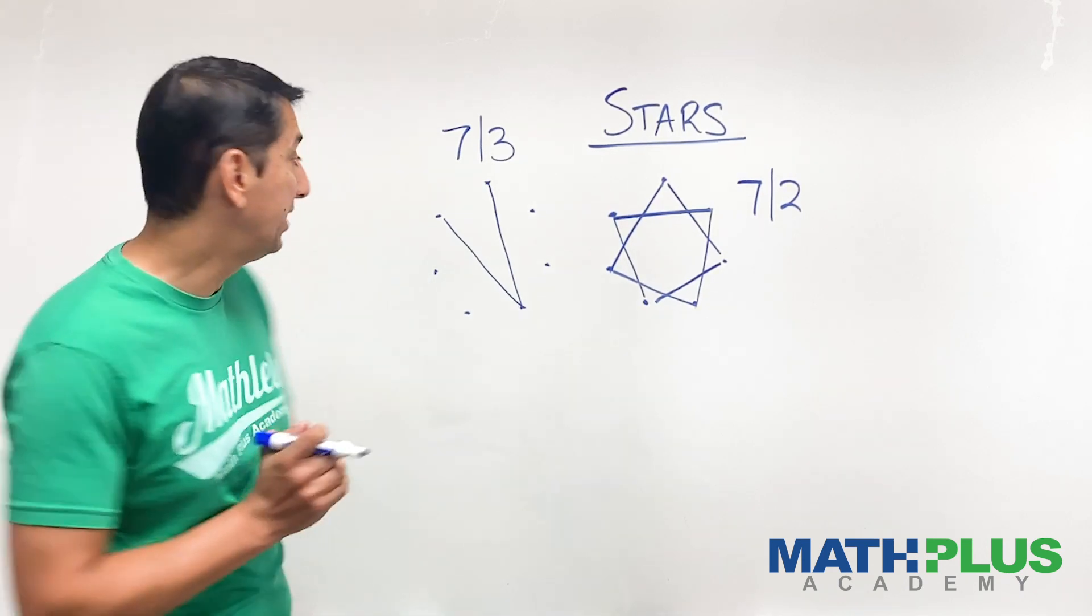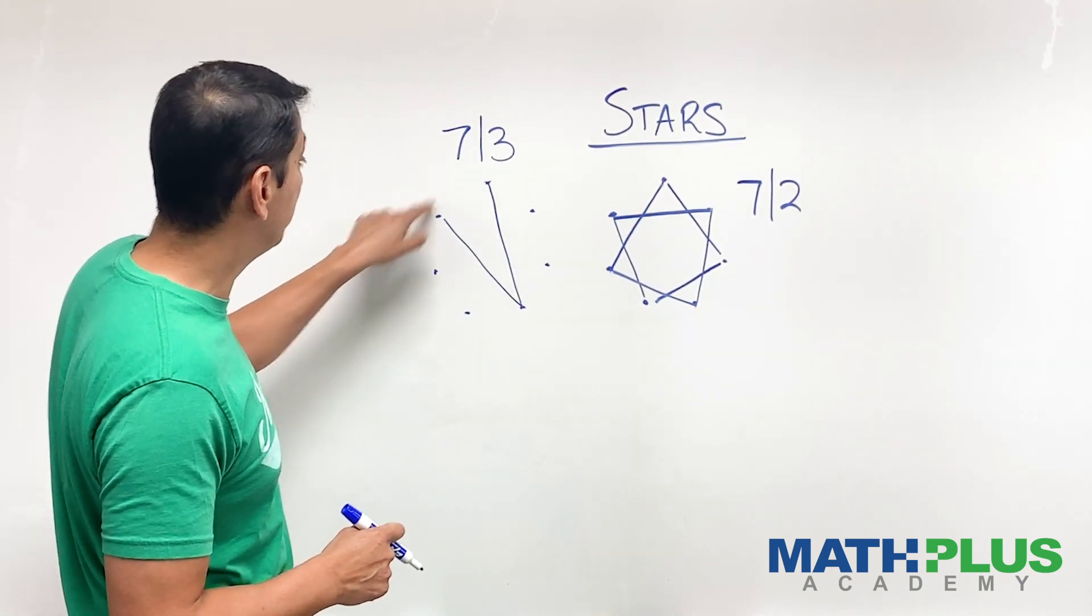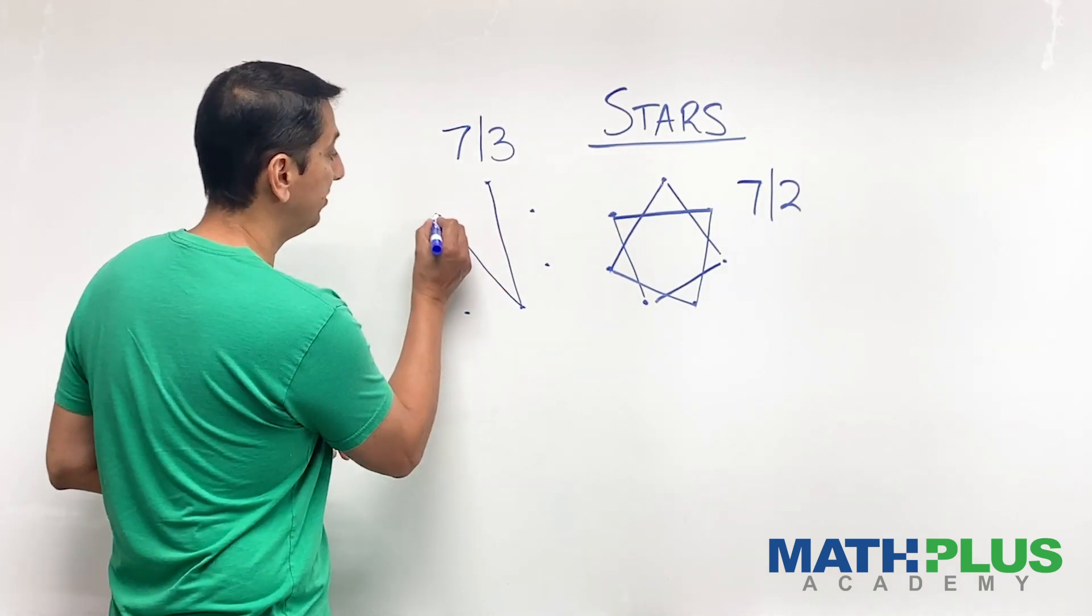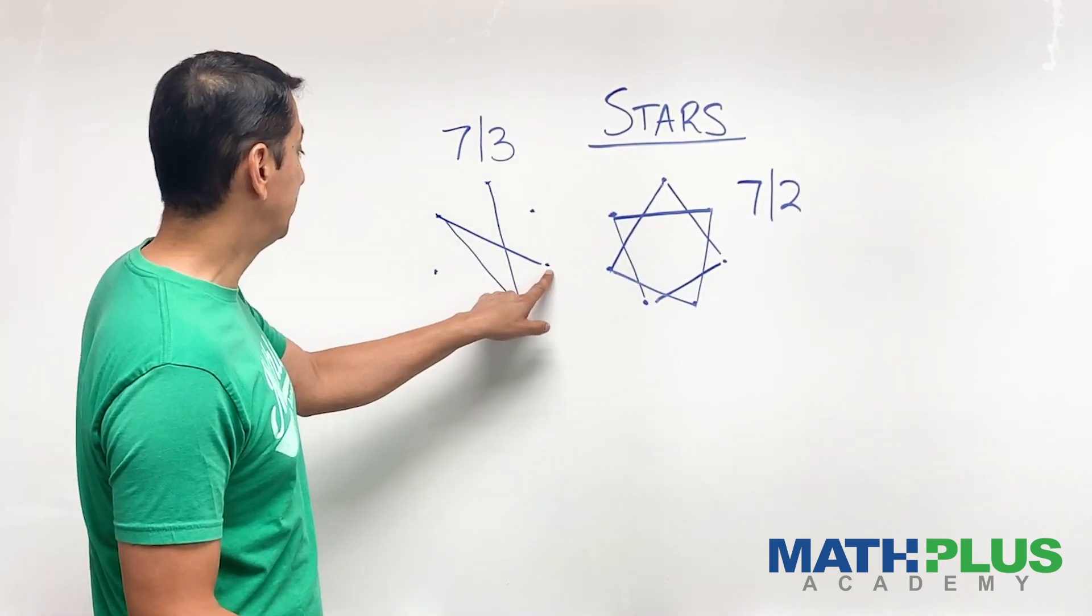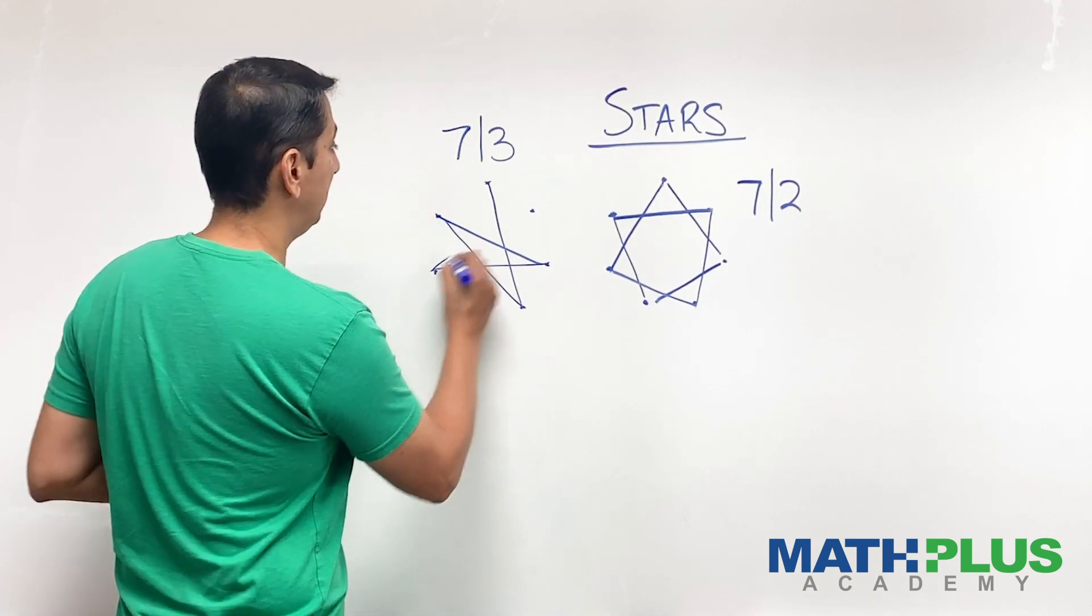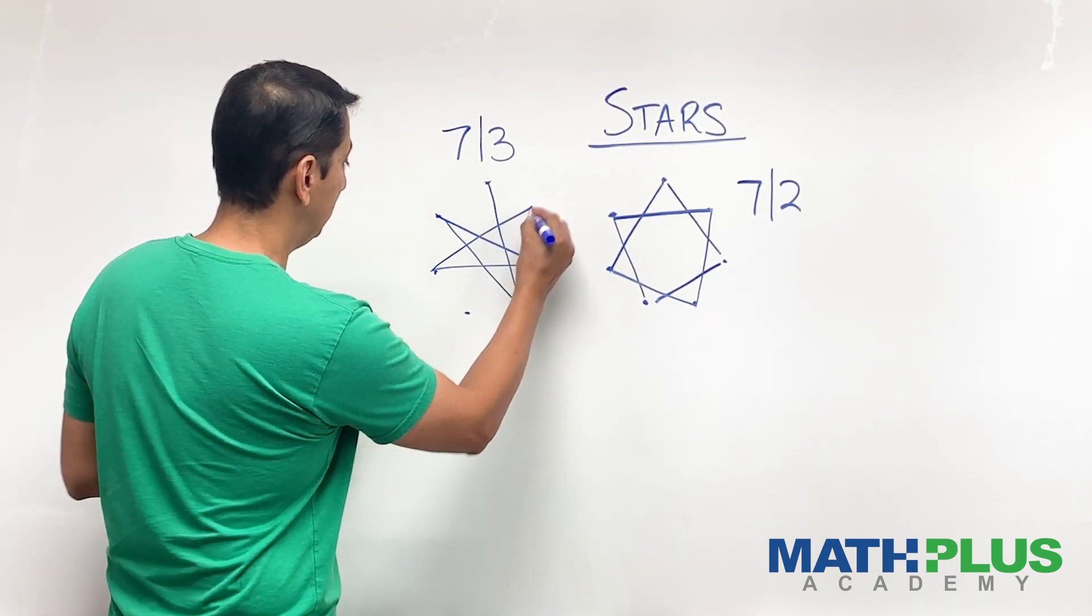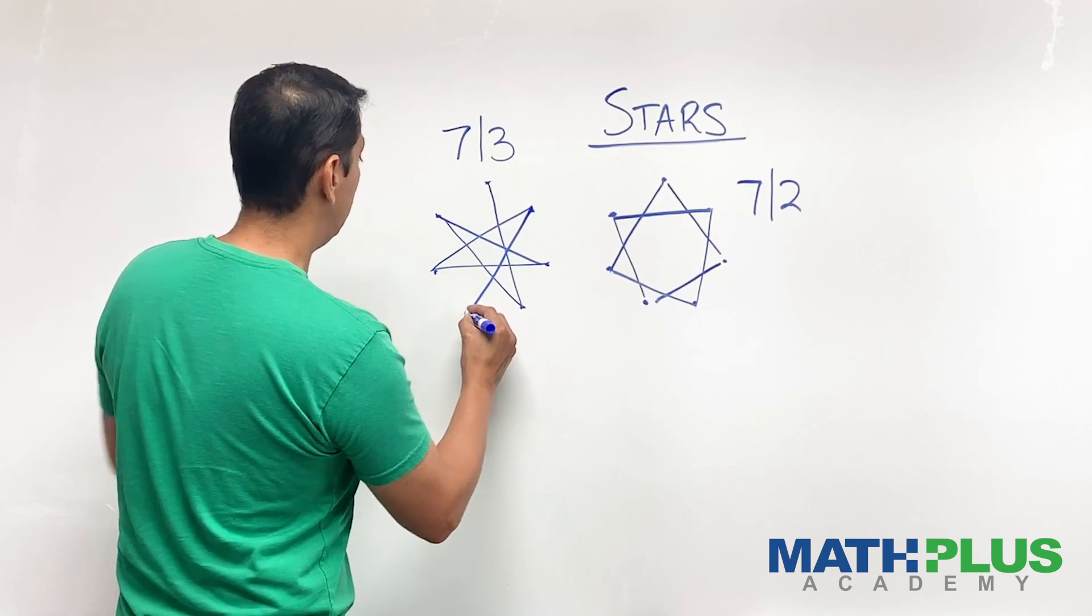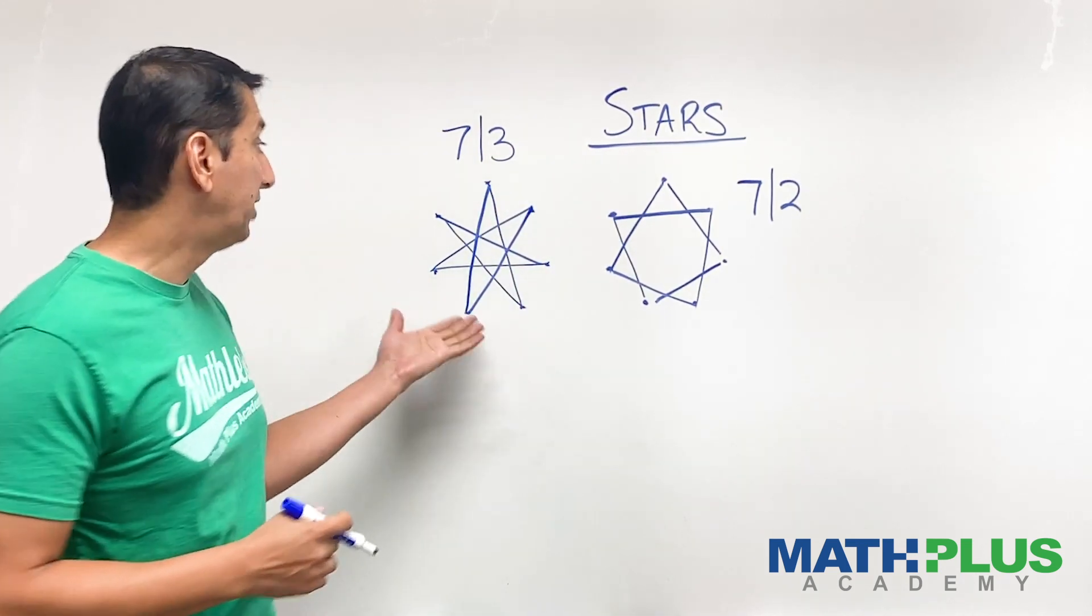All right, here we go. So let's see. This person is going to skip two and throw over there. And this person is going to skip two and throw across. Skip two and there. Skip two to there. Skip two and there. And skip two and back to me.